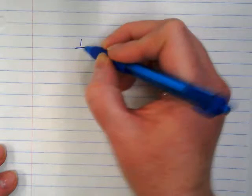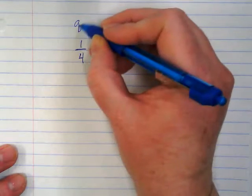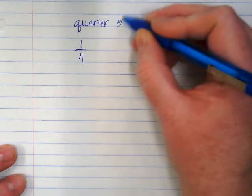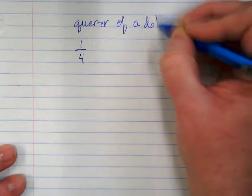Let's start with the fraction one fourth. If you think about one fourth, it's the same as a quarter. One fourth is a quarter. A quarter of a dollar is how many cents?